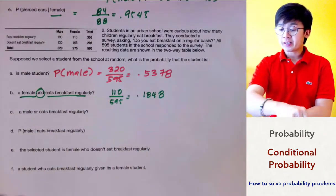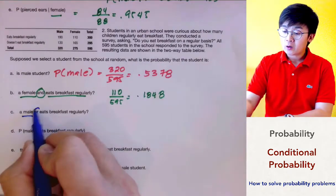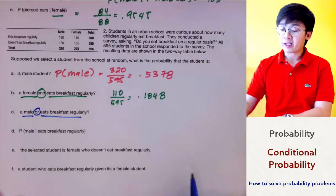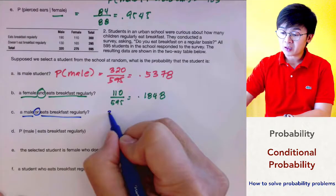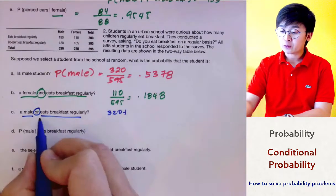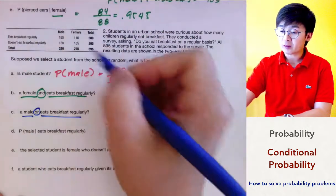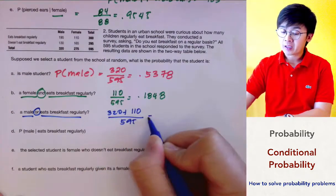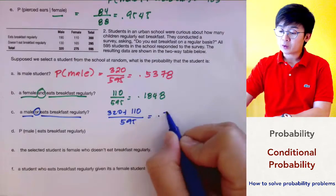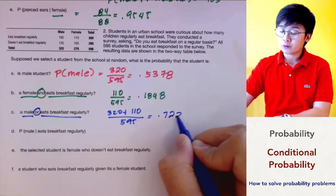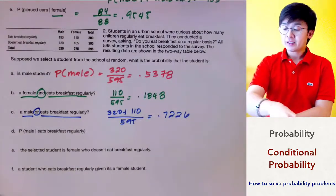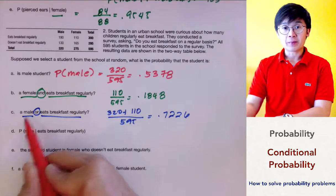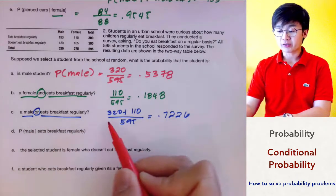For problem letter C, we're looking for male or eats breakfast regularly. We're going to use the sample of male students, which is 320, added to the sample who eats breakfast regularly, which is 110, divided by 595. If you add this up and divide by 595, it will equal 0.7226. This is the OR statement, so you add the male students and the students who eat breakfast regularly.